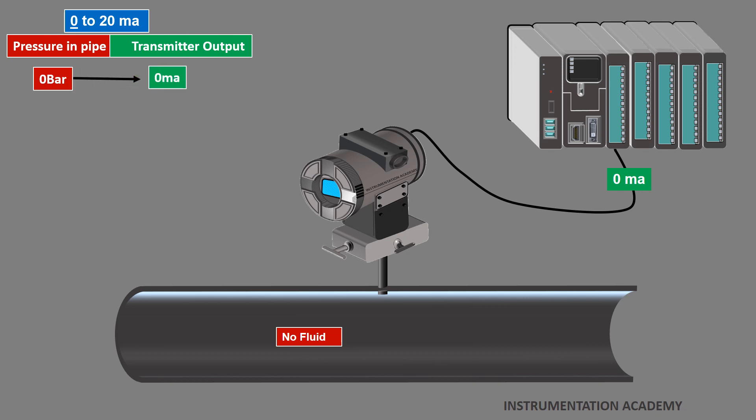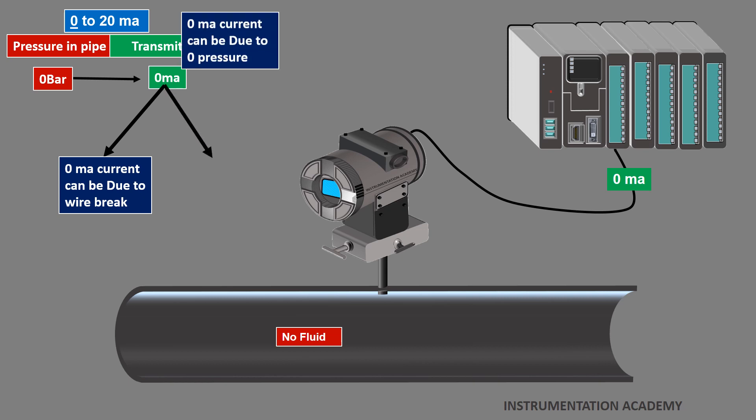In this case, it would be extremely difficult to identify that either 0 mA current is due to the wire break of the transmitter or it is due to no pressure of the fluid.